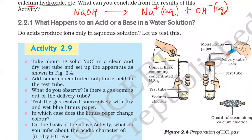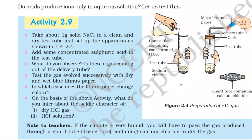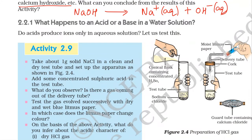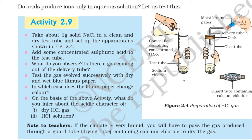Next, activity 2.9. Basically, we are seeing what happens to an acid or base in a water solution. Take about 1 gram NaCl in a clean and dry test tube. Set up the apparatus as shown in the figure. Sodium chloride is taken in the test tube and some sulfuric acid is added to it.